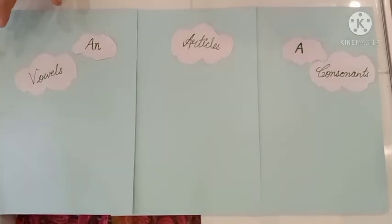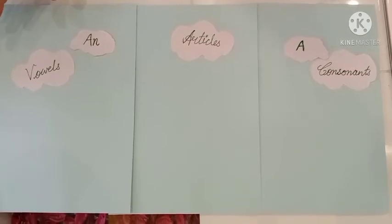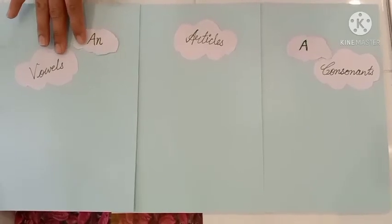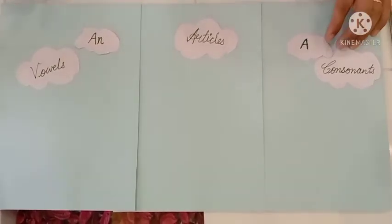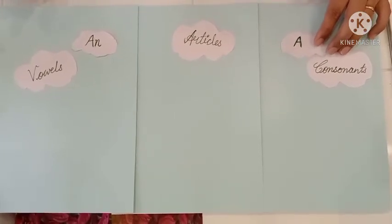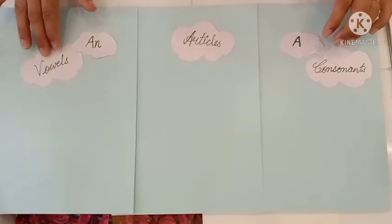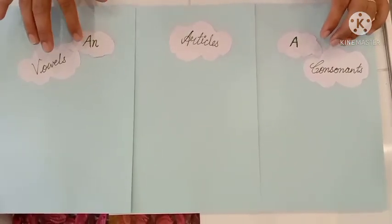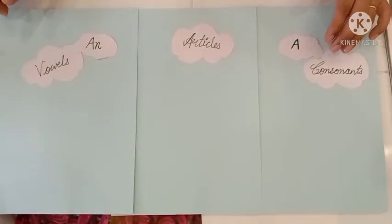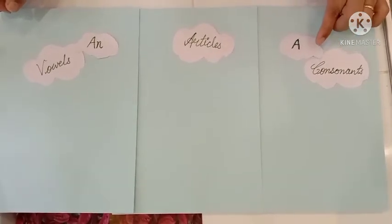English alphabets में 26 letters होते हैं। उसमें A, E, I, O, U हमारे vowels होते हैं और बाकी जो हैं हमारे consonants हैं। तो हम 'an' use करते हैं vowels से पहले, और consonants से पहले हम 'a' use करते हैं। कोई भी word जब vowel से start होगा तो हम 'an' use करेंगे। अगर कोई word consonant से start होता है, उसकी sound consonant sound है, तो हम 'a' use करेंगे।